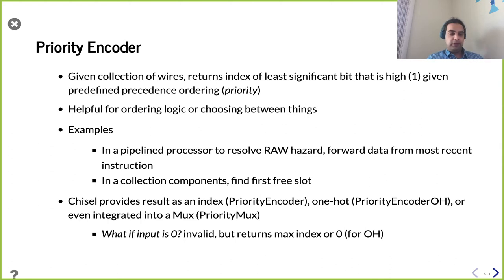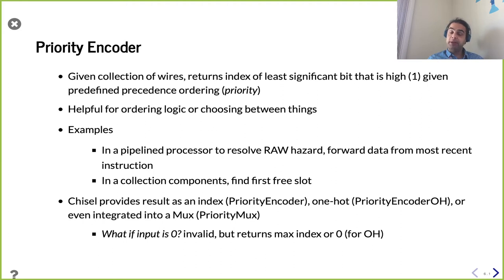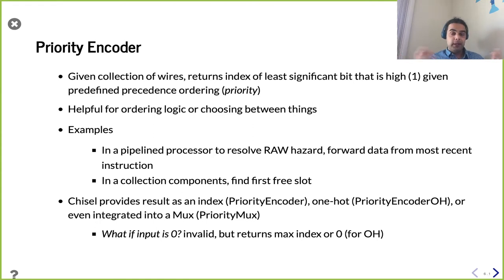Why is it helpful to have a static priority? There are some things where you want to know who wins a certain situation and you want a certain pecking order. For example, using a CPU example: if you have a pipelined processor worried about resolving a read-after-write hazard, you can use forwarding. You want to get the most recent producer of that data — if there are multiple instructions writing to a register you need, you want to forward from the most recent one. Or perhaps you have a collection of registers you need to pick one from, and you use a priority encoder to find the first free or empty register.